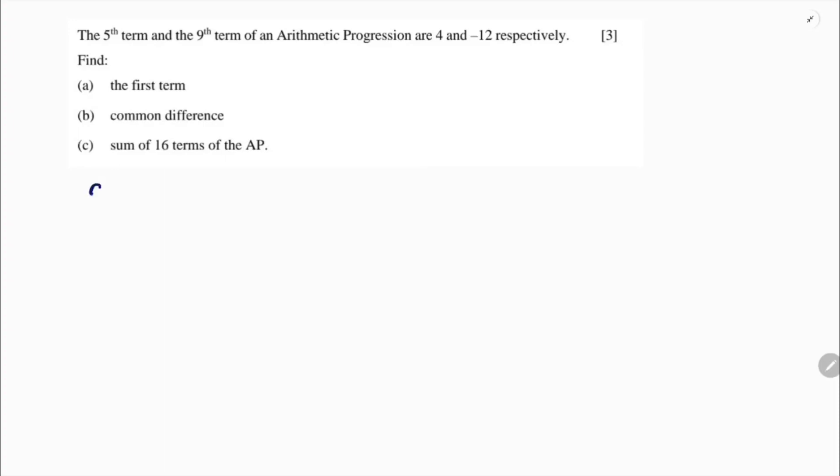Here they give the 5th term is 4 and 9th term is minus 12. So AN formula: A plus N minus 1 into D.